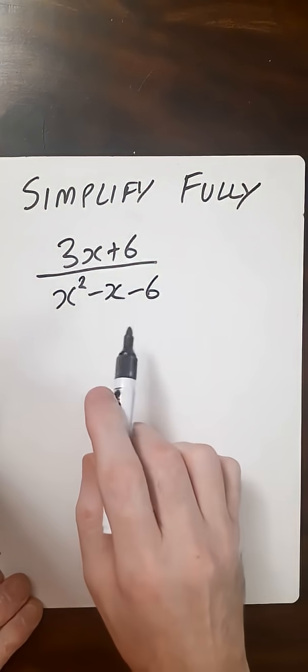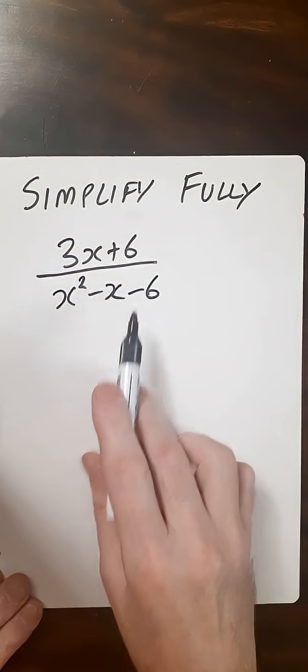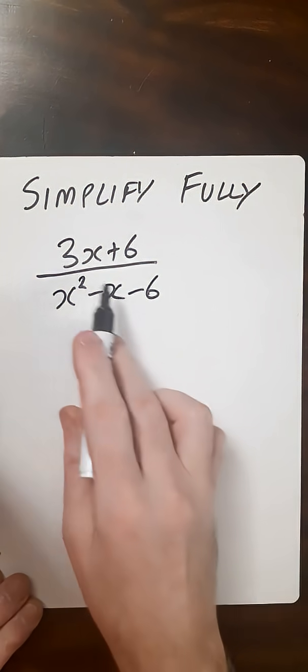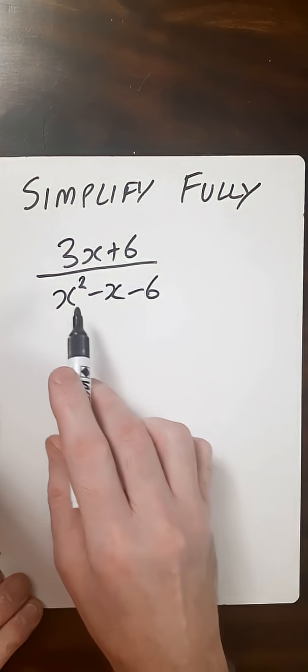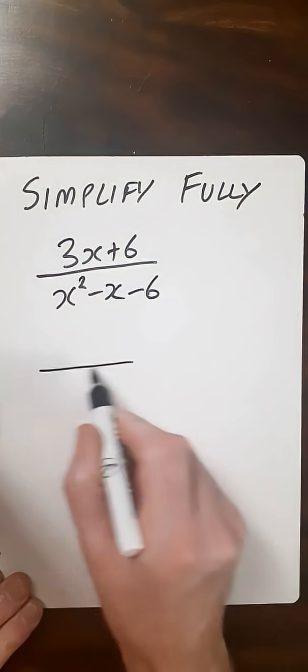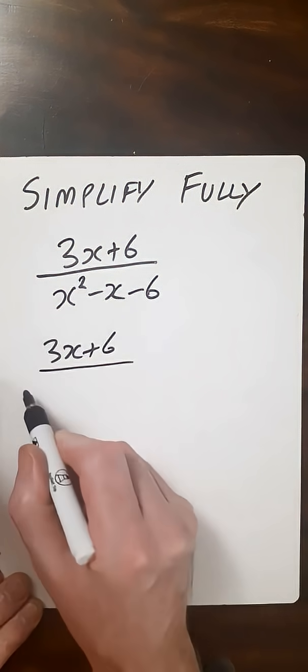In this question we want to simplify fully 3x plus 6 over x squared minus x minus 6. We've got a quadratic in the denominator, so these questions usually lead us to factoring out this denominator. So then we've got 3x plus 6, let's factor this out.